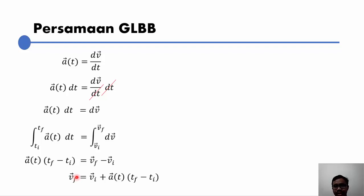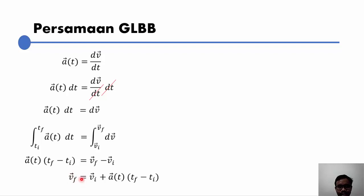Misalkan ada mobil bergerak dari jam 7 sampai jam 10. Kita mengamati pergerakan mobil itu dari jam 8 sampai jam 9. Maka kecepatan awal mobil dalam konteks umum adalah jam 7, dan kecepatan akhirnya adalah jam 10. Tapi kalau kita berbicara GLBB, maka V_initial adalah ketika jam 8 dan V_final adalah ketika jam 9. Artinya dalam range waktu jam 8 sampai jam 9, itulah interval pengamatan kita.